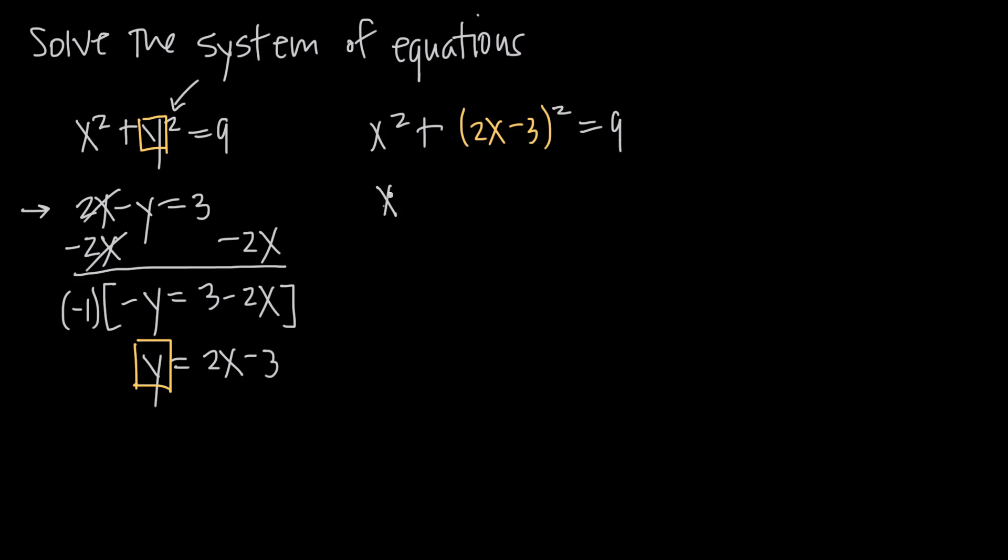Now we want to go ahead and simplify. So this is really x squared plus 2x minus 3 times 2x minus 3. We're just squaring the binomial, so we have to write 2 factors of this binomial. And I like to write them out because now it'll be easier for us to foil and make sure we get everything. So foiling this out, 2x times 2x is 4x squared. 2x times a negative 3 is a negative 6x. Negative 3 times 2x is a negative 6x. And negative 3 times a negative 3 is a positive 9.